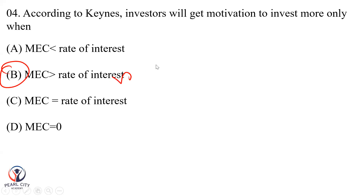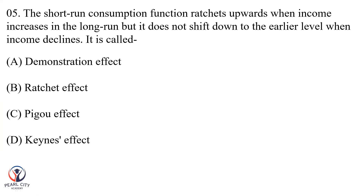B is the right answer. The short-run consumption function ratchets upwards when income increases in the long run, but it does not shift downward to the earlier level when income declines. This is the effective pair of money.